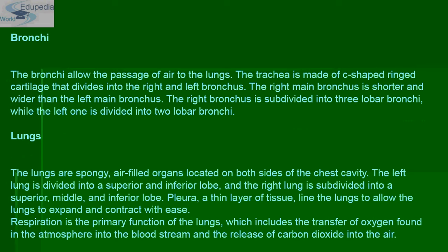After the larynx come the bronchi and lungs. The bronchi allow the passage of air to the lungs. The trachea is made of C-shaped ringed cartilage that divides into the right and left bronchus. Usually, the right main bronchus is shorter and wider than the left main bronchus. The right bronchus is subdivided into three lobar bronchi, while the left one is divided into two lobar bronchi.